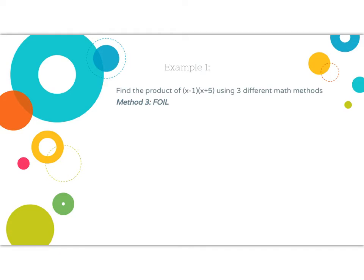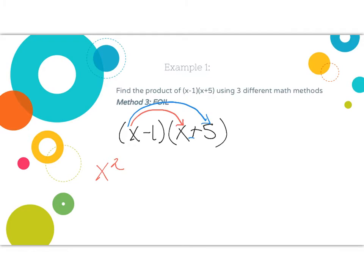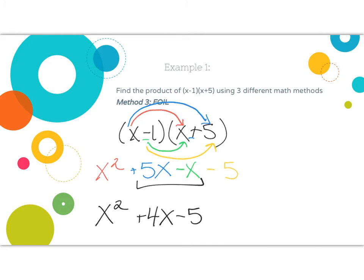The last way we'll show the product of x minus one times x plus five is to FOIL them. First terms: x times x is x squared. Outside terms: x times positive five is 5x. Inside: negative one times x is negative x. Last term: negative one times positive five is negative five. We can collapse our middle two terms and we are left with x squared plus four x minus five.